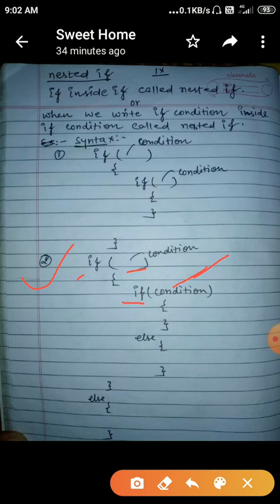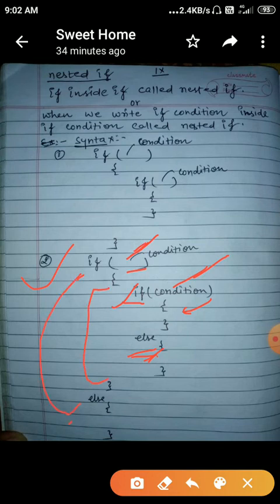Suppose the inner condition is true, then this part will execute. Otherwise, the else of this inner if will execute. Suppose the inner condition is false, the cursor will come into the else part. This else is related to the inner if.